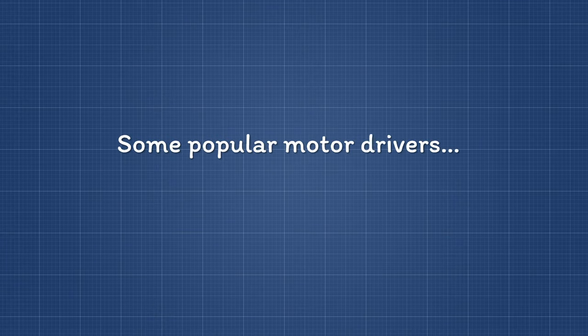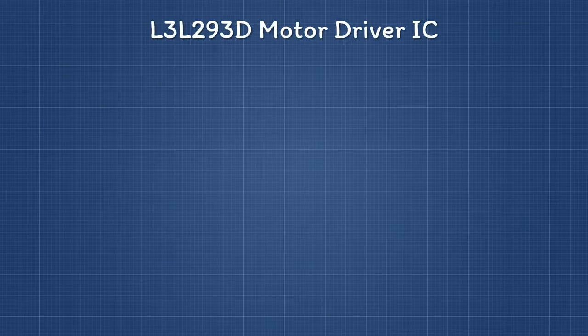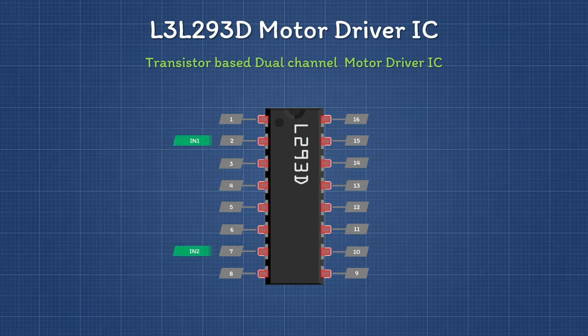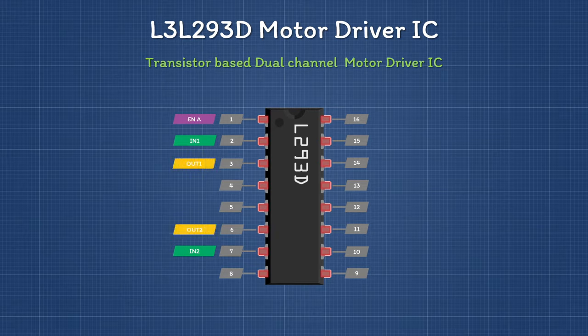The most popular motor driver is the L293D, which is widely used and very inexpensive. It is a dual-channel transistor-based motor driver, meaning it can operate two motors separately and control both the speed and spinning direction of two DC motors. Looking at the pinout of this IC, all the control inputs for motor 1 are on the left side, including one enable pin which allows a PWM signal to control motor speed.